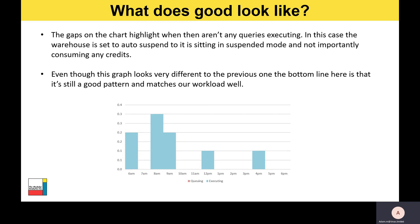Here's another scenario that's also a good one. The gaps on this chart highlight when there aren't any queries executing, but in this case the warehouse is set to auto-suspend, so it's sitting in a suspended mode and importantly not consuming any credits. Example use cases for this pattern include intraday micro-batch data loads or sporadic event-based messages landing in an S3 bucket, which could trigger Snowpipe to load data into Snowflake. So event data lands periodically throughout the day, Snowpipe picks it up, auto-resumes the warehouse, a query runs, and then it shuts down. Even though this graph looks very different from the previous one, the pattern matches the workload well — you need to consider what workload your warehouse is serving.